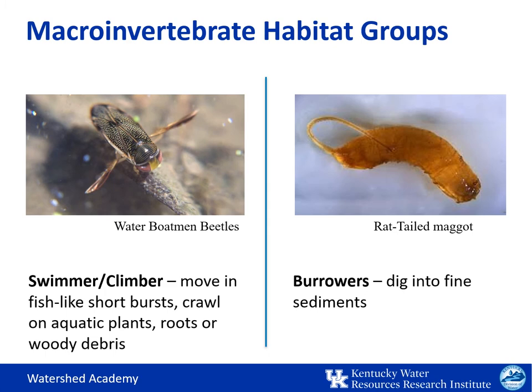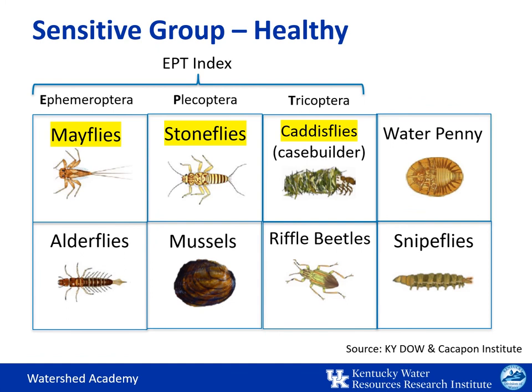Feeding and habitat groupings are combined with other factors to develop correlations with water quality within specific ecological regions. These indicators help provide a general understanding of water quality conditions and alert stream scientists to potential problems in need of attention or high water quality in need of protection. Some species of benthic macroinvertebrates are more sensitive to pollution than others, so they can be grouped by their sensitivity to pollution. The presence of many or all individuals in the sensitive group would indicate good water quality; however, a variety of macroinvertebrates from each group should be found in a healthy stream.